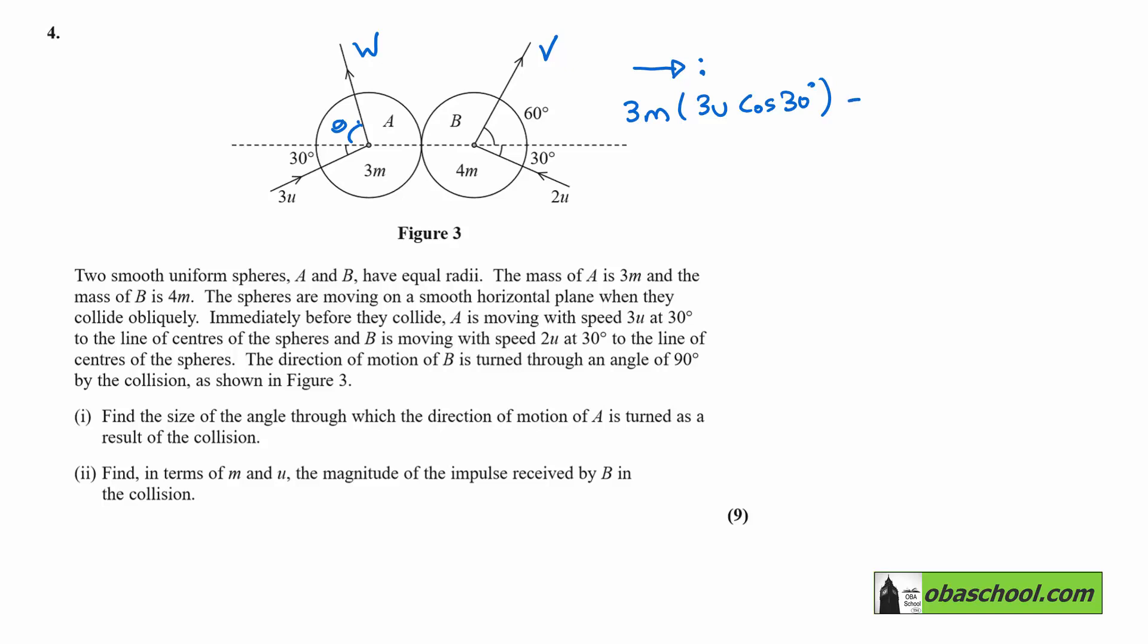In the same way, for particle B, we get 4M 2u cos 30. And this one is a negative because this one is going this way, whereas A is going this way. So I'm taking the right as positive.